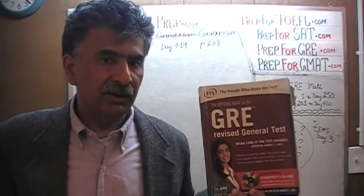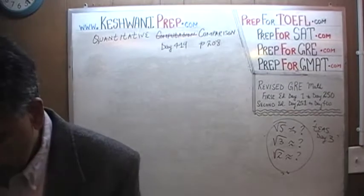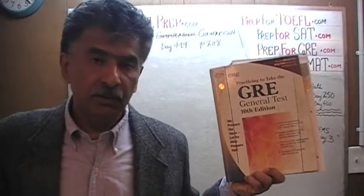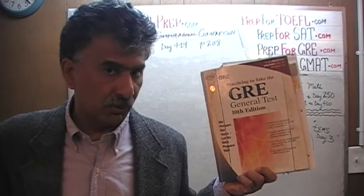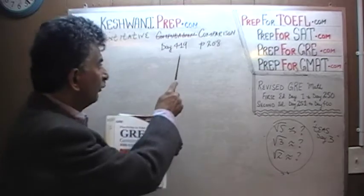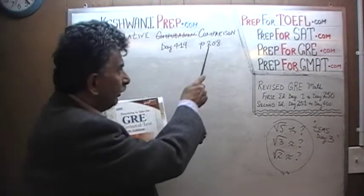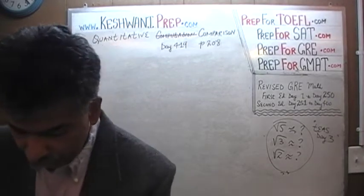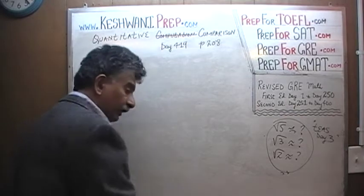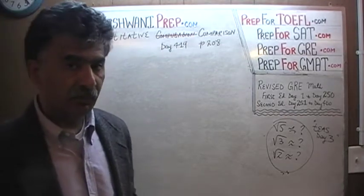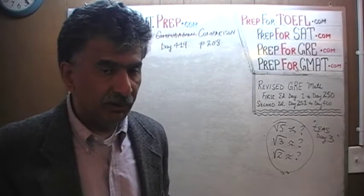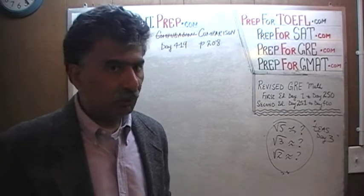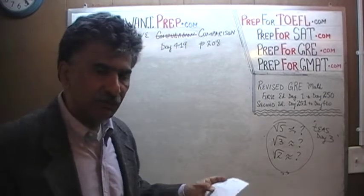Original solutions tend to be a little lengthier and a little bit more in-depth. Right now we are in the process of solving quantitative comparison questions out of this book, the 10th edition of the General GRE, because the other two books simply do not contain enough quantitative comparison questions. From day number 401 we started solving quantitative comparison questions, and right now we are on page number 208, problem number 12. Always remember — even if I forget to remind you — always pause the video as soon as I set up the problem, solve it yourself, and then compare your work against what we will do together. You will always learn more that way instead of simply watching the solution.